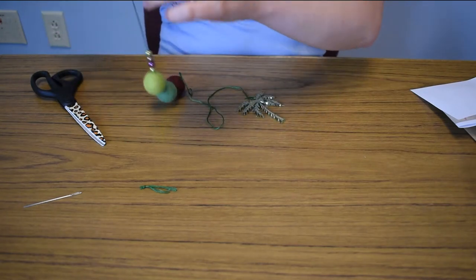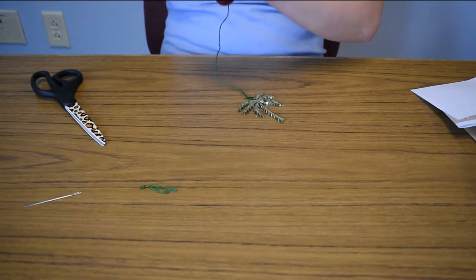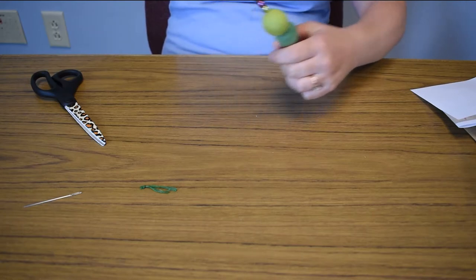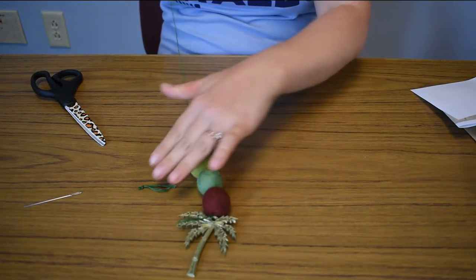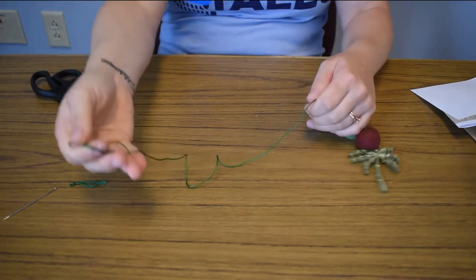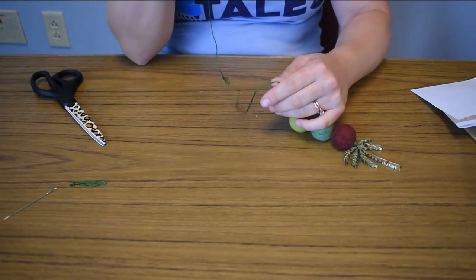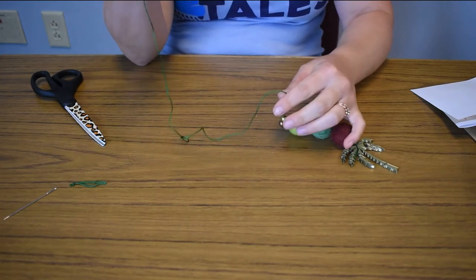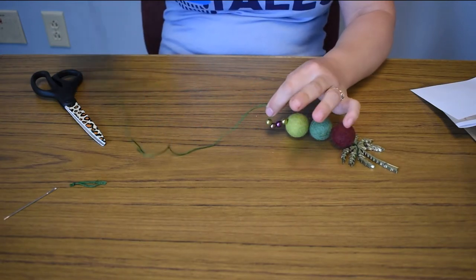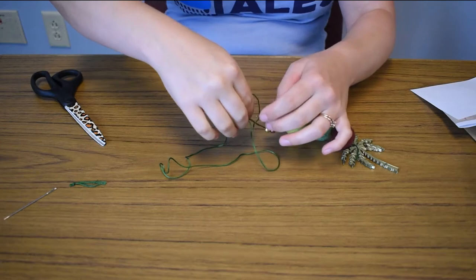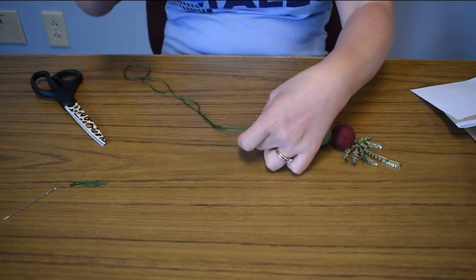And then hold this up like so. So then you have everything here. And then you have the rest of your string. You would take this. You would go to your rear view mirror in your car. And you would just tie this around the back and secure it right here.